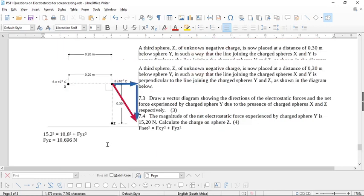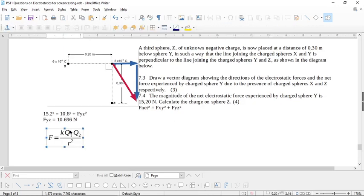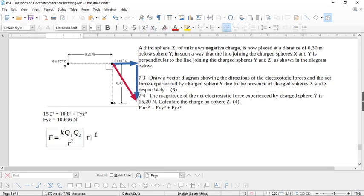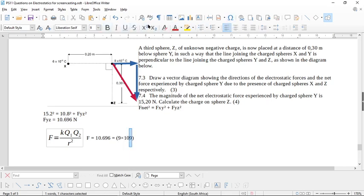So once you've got the force, you can calculate the charge because you just take this formula again. And then you say here the force is equal to 10.696 which you just calculated, which is equal to k 9 times 10 to the 9 multiplied by, what's the other charge here? This charge was 8 times 10 to the -6, times qz, qz, all over the r squared and the r is 0.3 and it was in meters, so we're fine there.